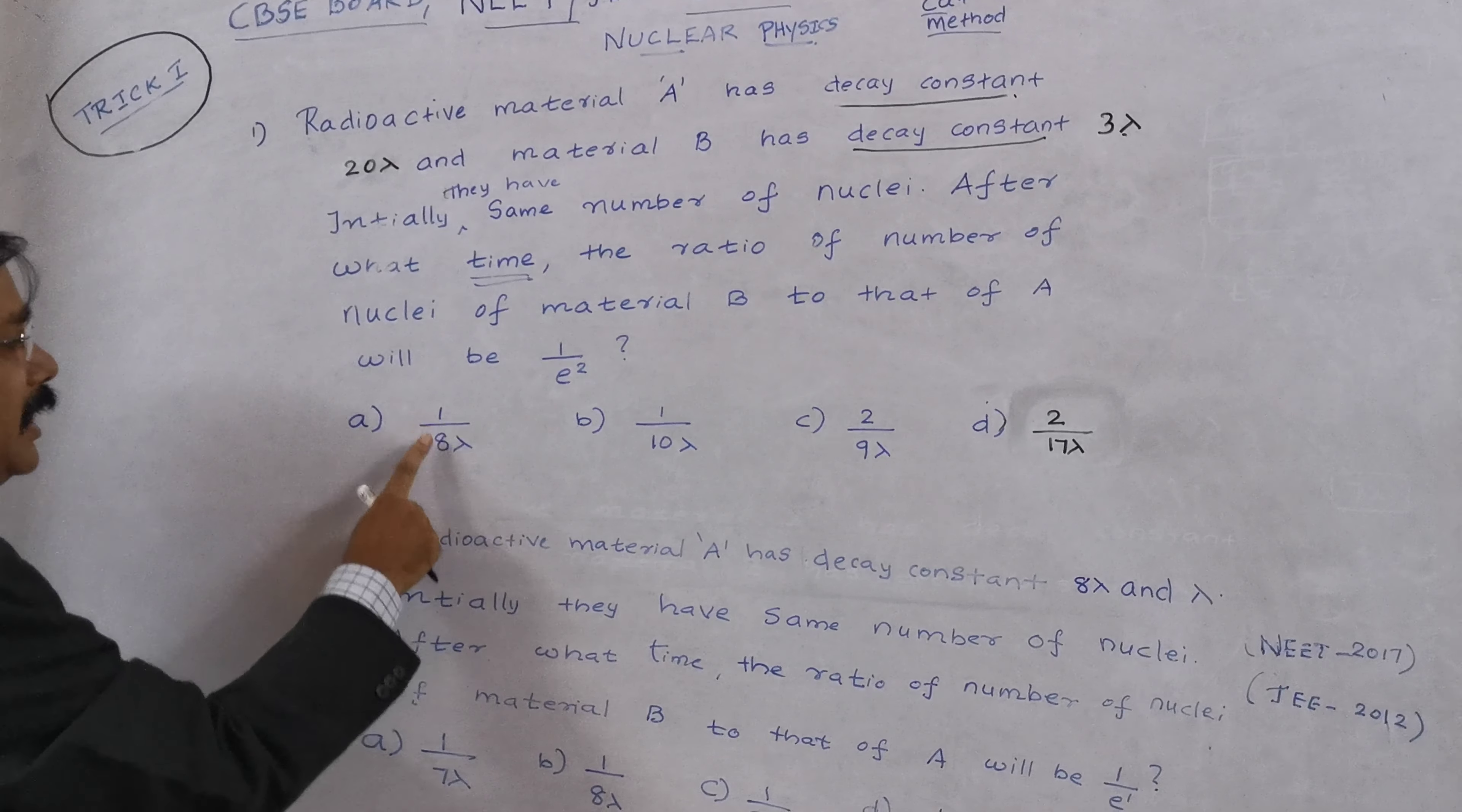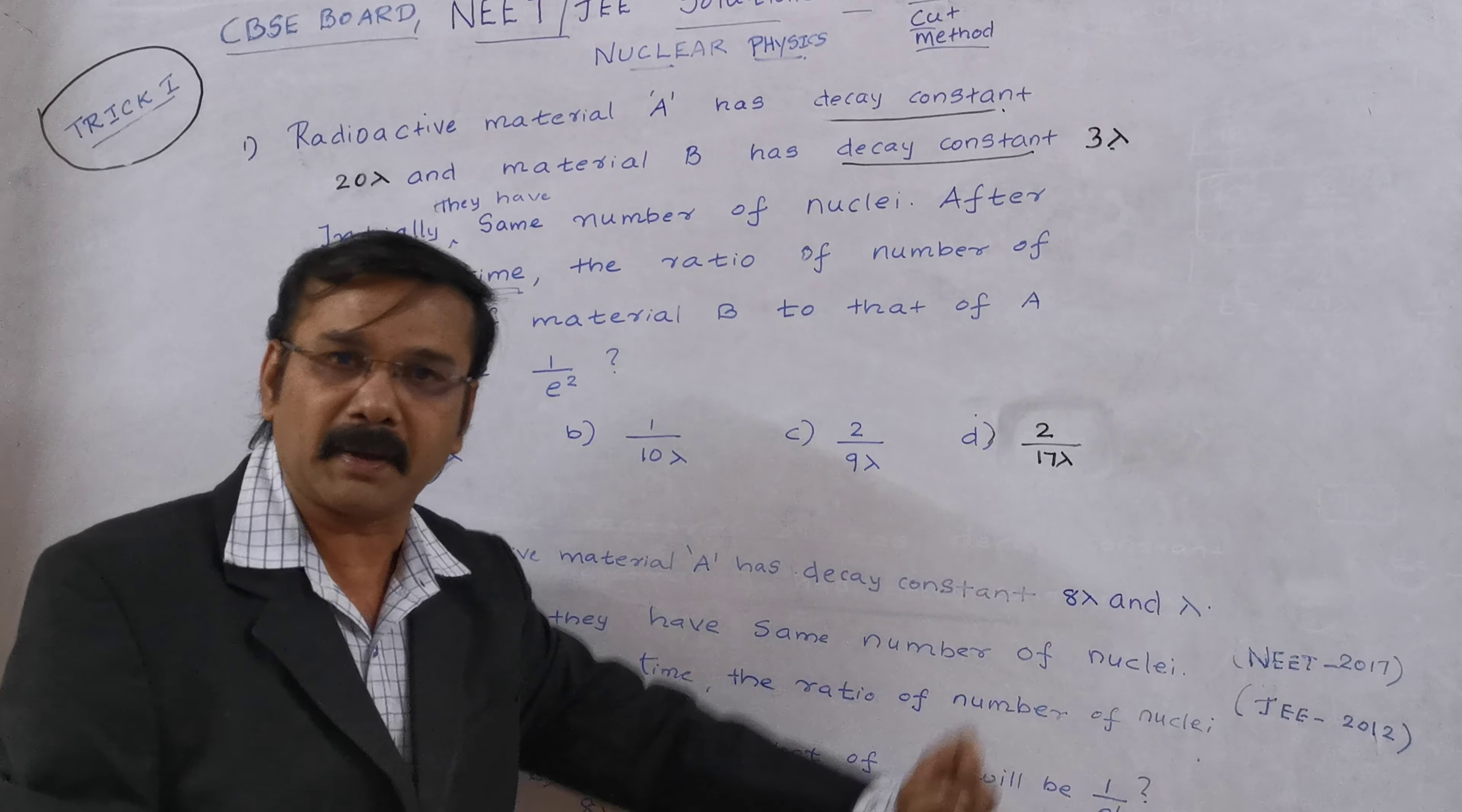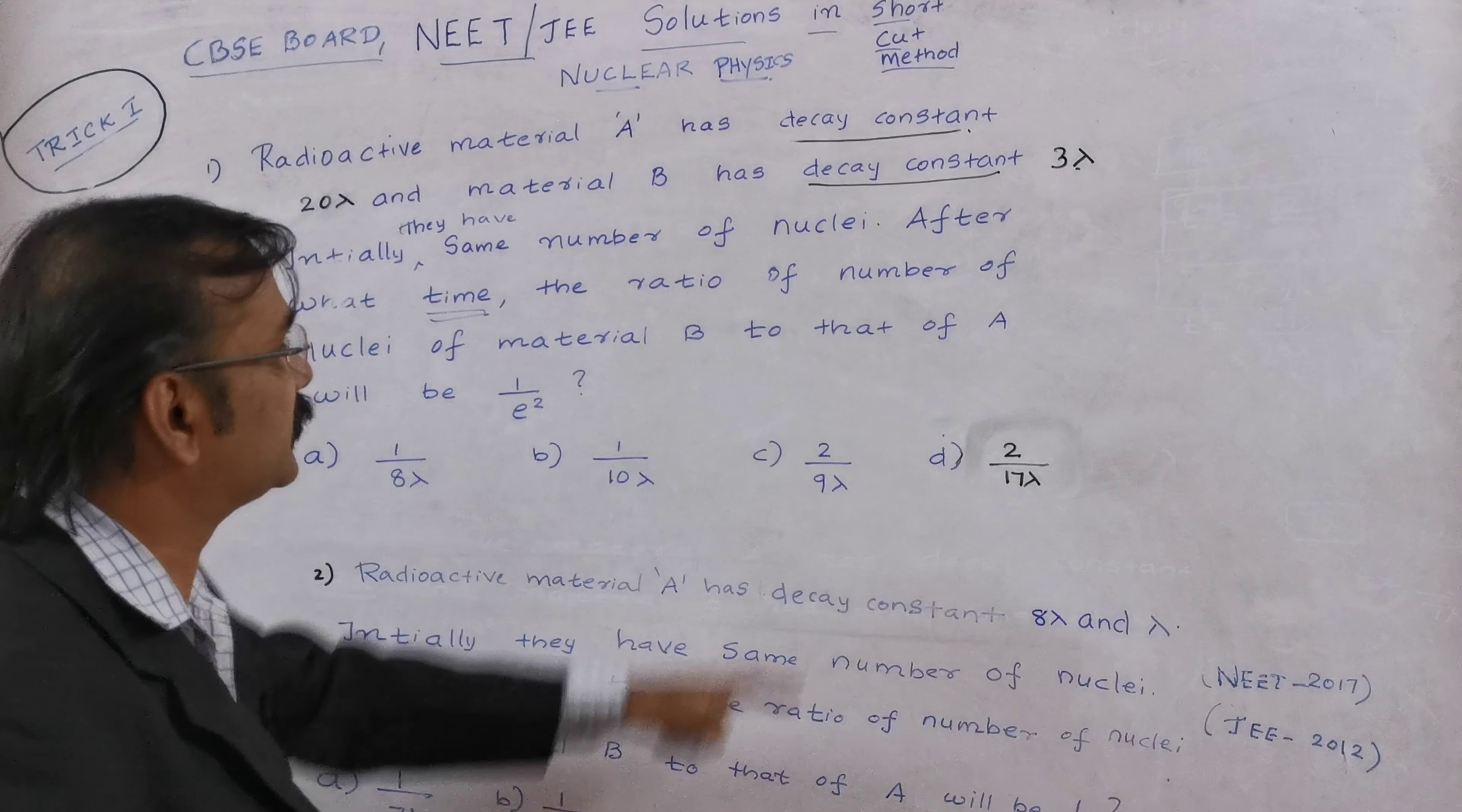Now the options are given: 1 by 8 lambda, 1 by 10 lambda, 2 by 9 lambda and 2 by 17 lambda. These are the four answers they are given in the question. Now I am going to tell you the magic trick of getting a solution within 10 seconds. Are you ready now? The only numbers are 1 to 10, within that I am going to get a solution for this first question.